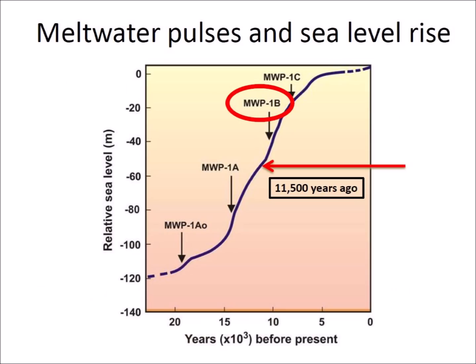The Younger Dryas was followed by another surge called Meltwater Pulse 1B, from 11,500 to 11,000 years ago. Sea level may have increased by as much as 28 meters. The single extraterrestrial impact that created the Carolina Bays would not have produced so much water, but it is possible that the impact destabilized the Laurentide Ice Sheet and increased the rate of melting. Another possibility suggested by the Comet Research Group is that there were multiple impacts on the Laurentide Ice Sheet from a disintegrating comet, although the location of other impacts has not been found.